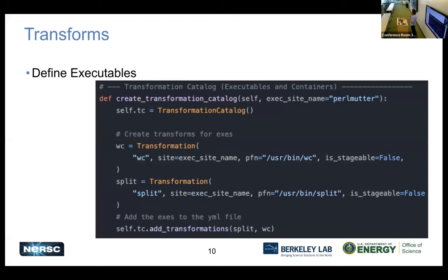The transforms part is a way of defining what our executables are. Here's part of the Python API showing a function that's going to create this transform catalog. We make our transform catalog object and then we can add transforms to it. The way Pegasus defines its executables is like this - we can tell it what site we want to execute on, what the executable is, and then we add all of these to a list that gets put into the YAML file of transforms.